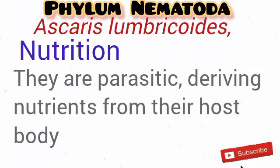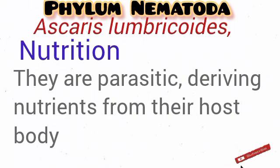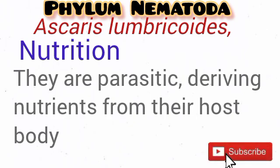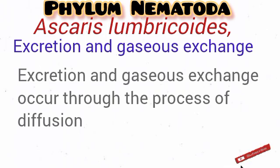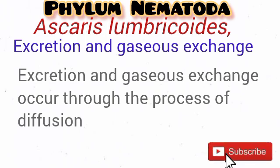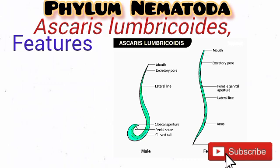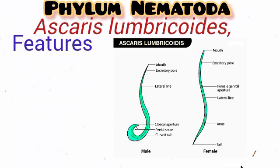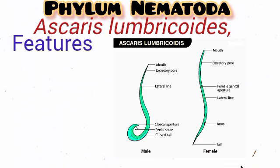In terms of nutrition, Ascaris derives its nutrients from its host. This parasite passes through numerous organs in the body of humans, including the gut and the trachea, deriving food from the host. Excretion and gaseous exchange occur through the process of diffusion in Ascaris lubricoides. Some features are displayed in the diagram: they possess two openings — the mouth and the anus — the female is bigger than the male, and you can see the lateral line and other features.